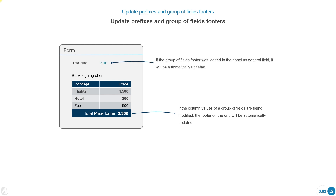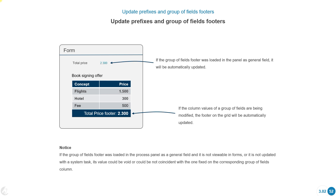If the group of fields footer was loaded and added to the panel as a general field, it can be automatically updated by adding it to the form, or it can be updated when triggered by a system task. There's an important note: if the footer was added as a general field and it's not visible in forms or updated with a system task, in certain scenarios it could be empty or have a different value than the real current value.